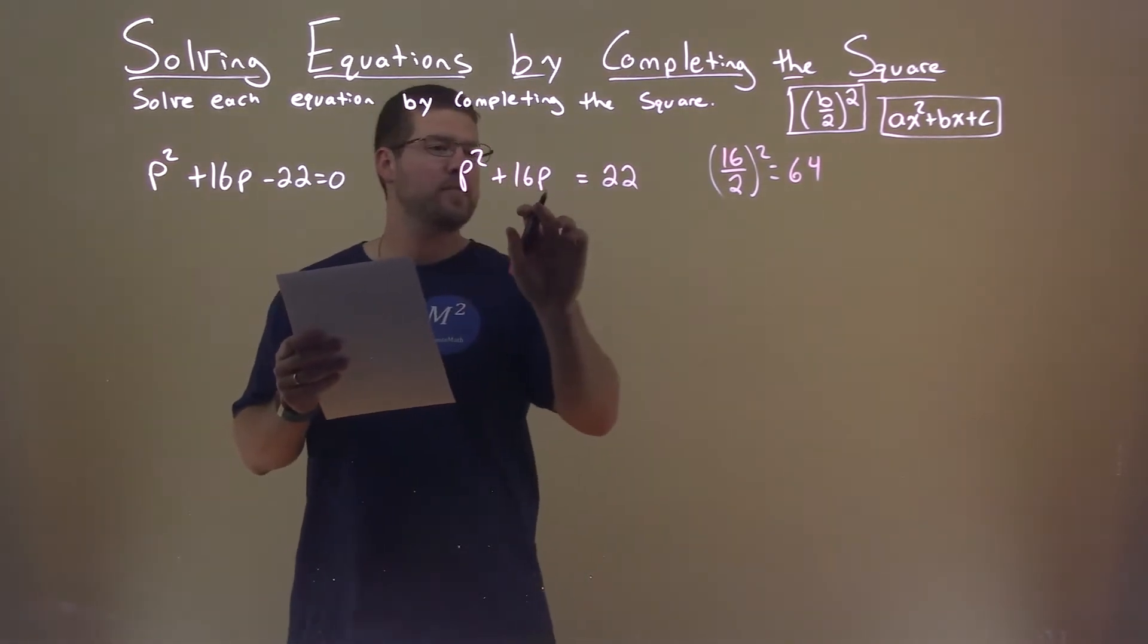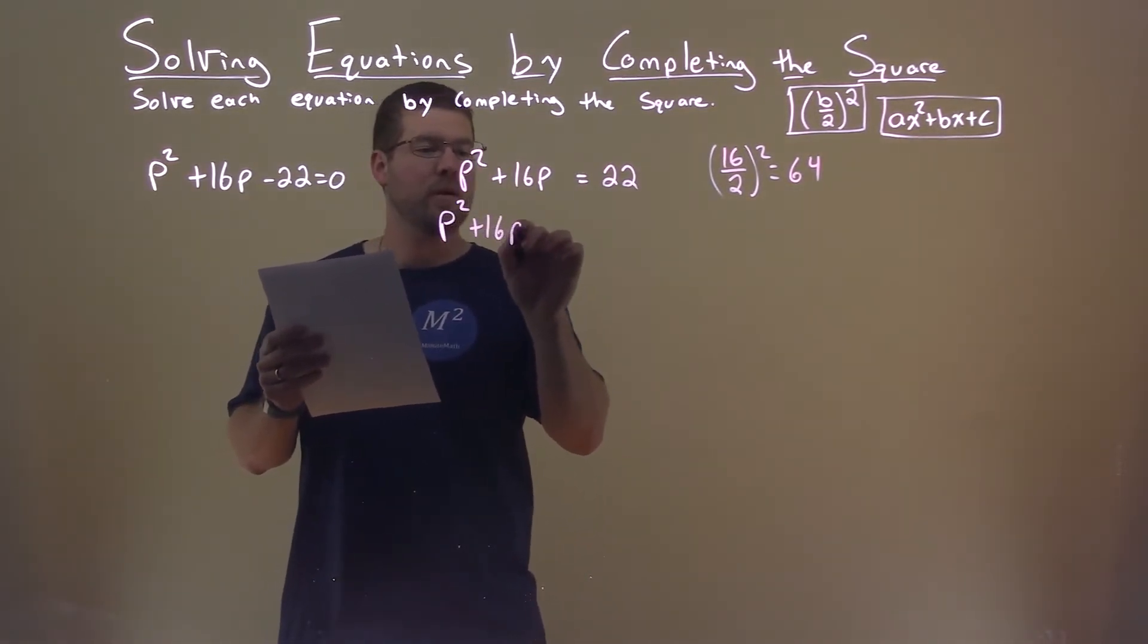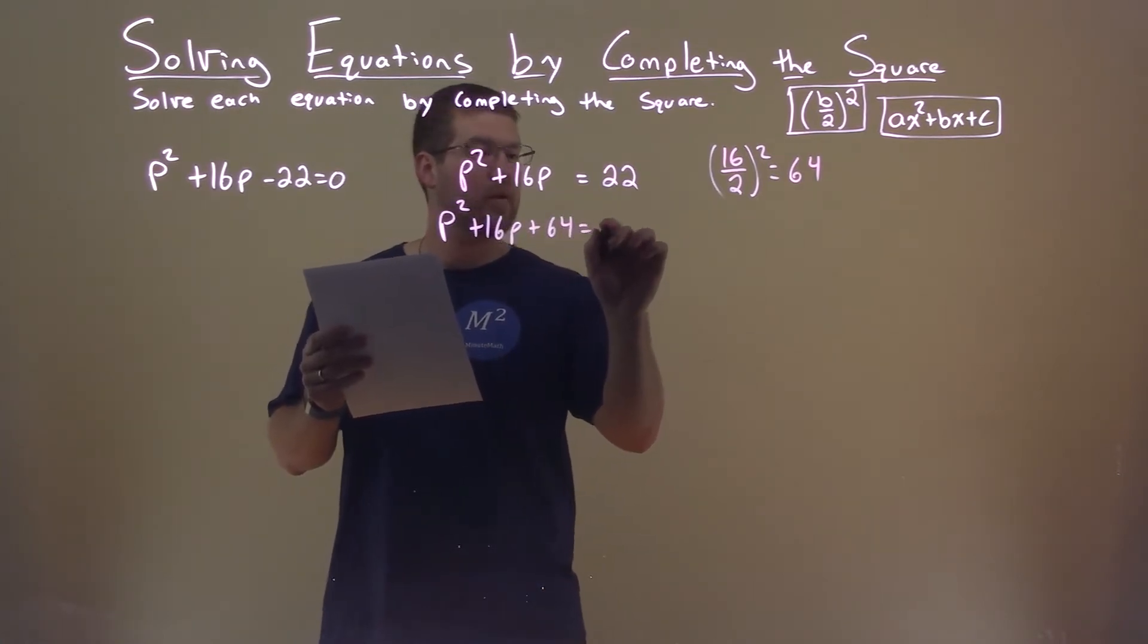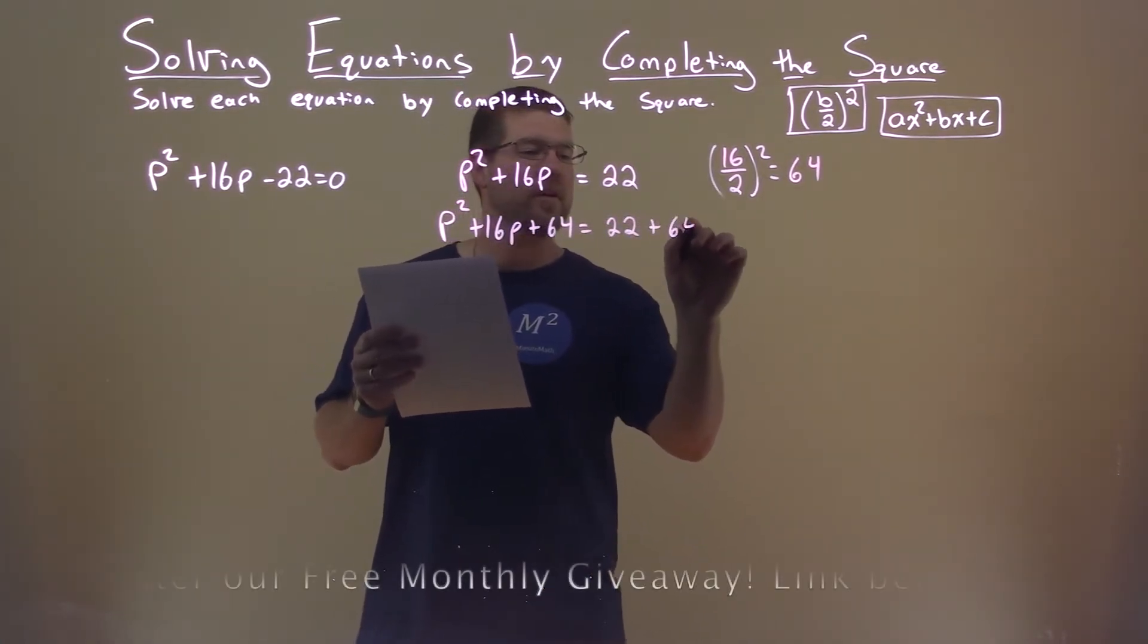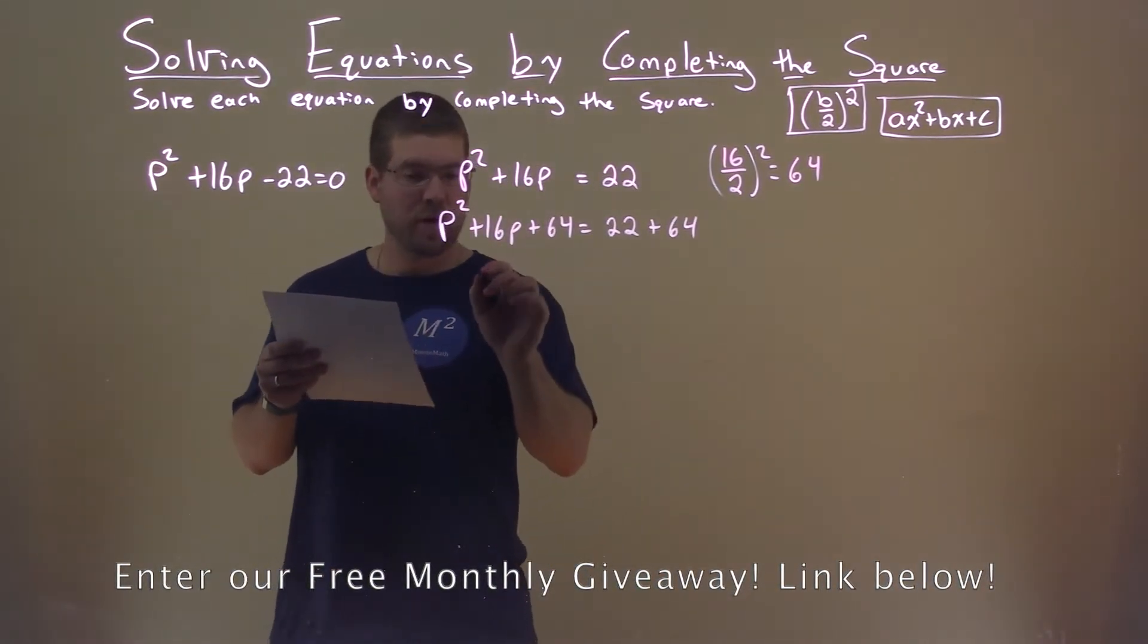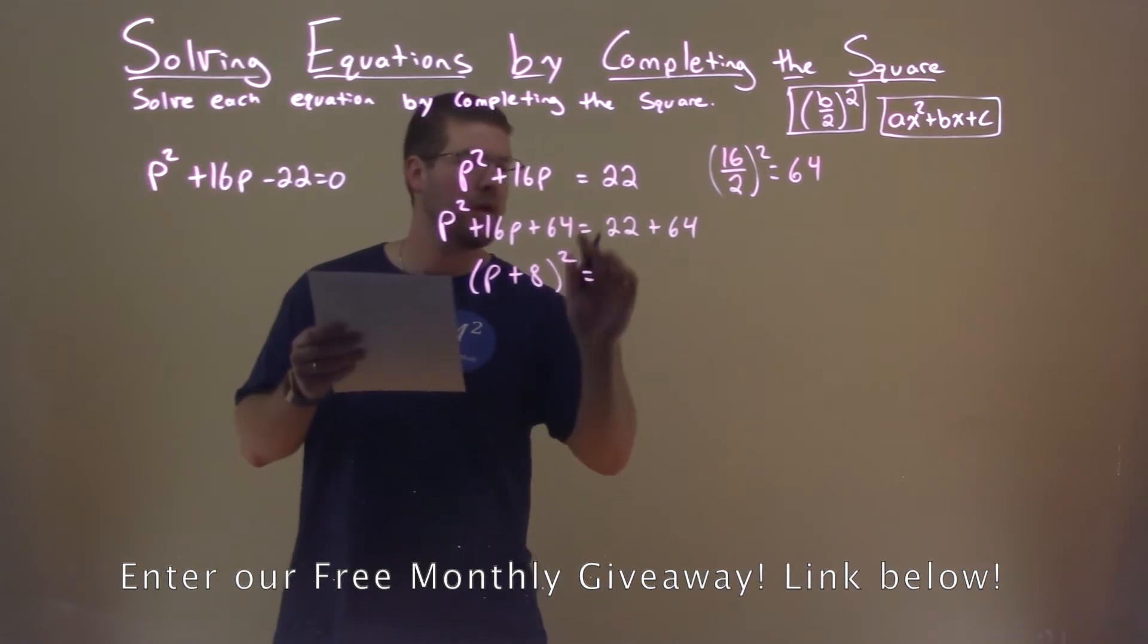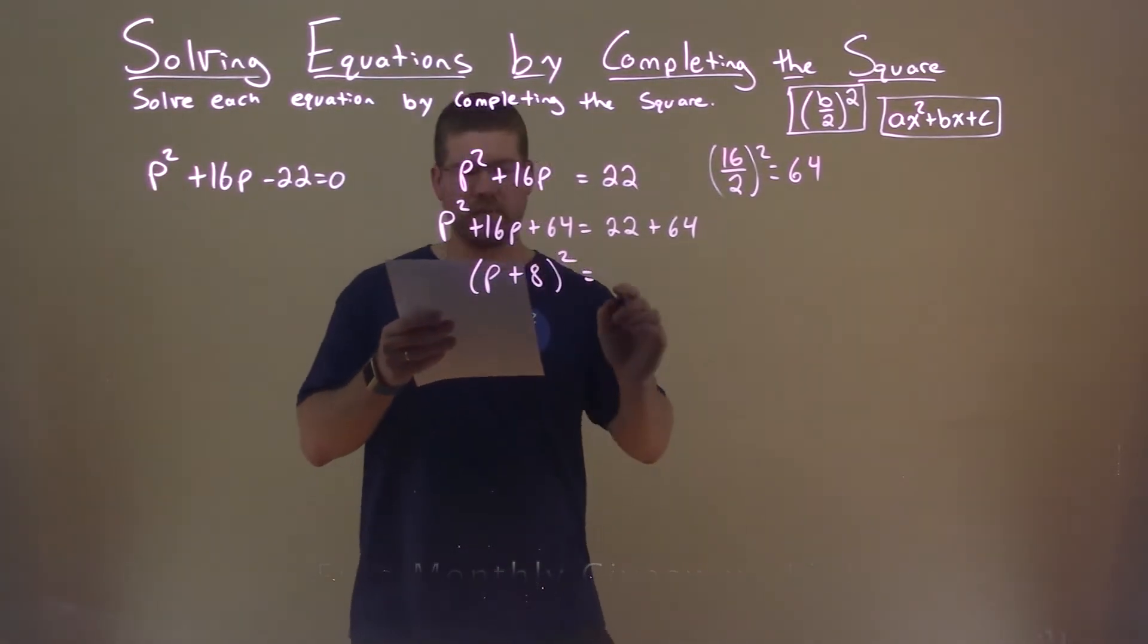So now we can add 64 to both sides of the equal sign. p squared plus 16p plus 64 equals 22 plus 64. The left-hand side is a perfect square now, p plus 8, all squared. The right-hand side, we add that together, and we get an 86.